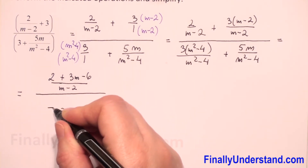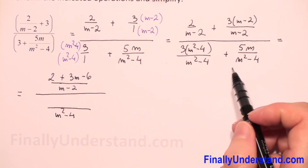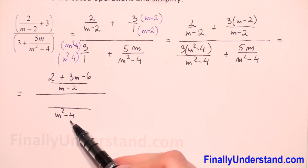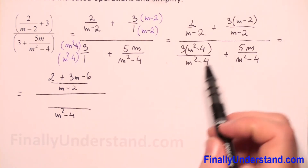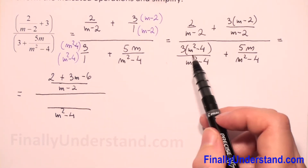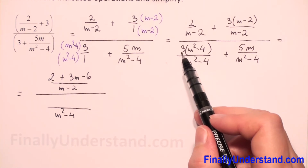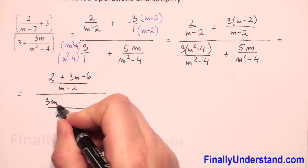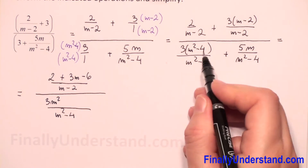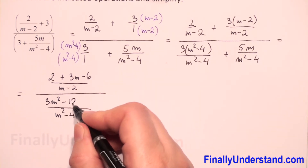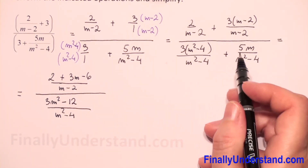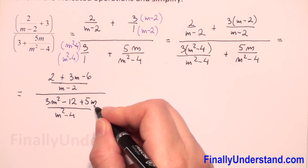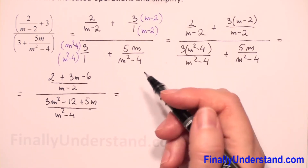Because we have addition, to add two fractions we need to have the same denominators. So now we copy the denominator and add just the numerators. I will do the multiplication: 3 times m squared is 3m squared, 3 times negative 4 is negative 12, and we have plus 5m.